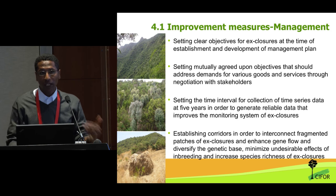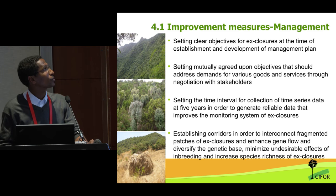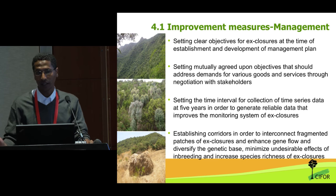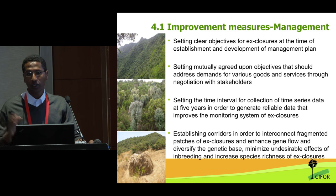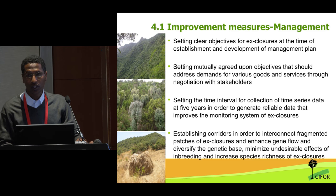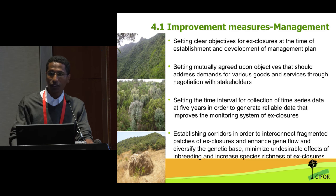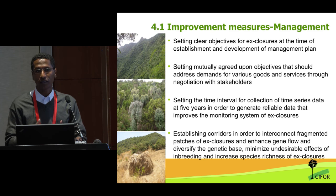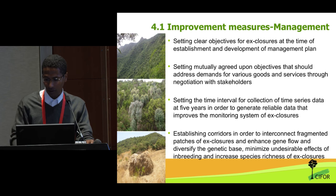We also identified management improvement measures. One is to set clear objectives for exclosures, because at the time of establishment they are set just for rehabilitation without defining what comes next. More economic planning is required. We need to set a management plan at the start, with mutually agreed-upon objectives that address demands for various goods and services through stakeholder negotiations. Setting time intervals for monitoring, like the Chinese case for example, and establishing corridors to connect exclosures for large-scale forest landscape restoration and improved landscape connectivity.